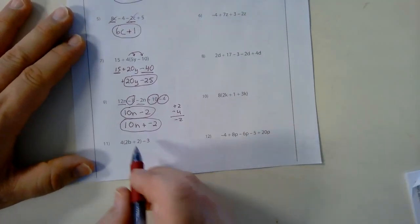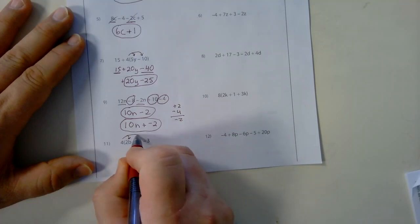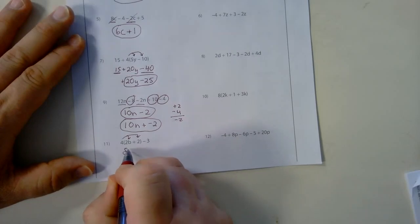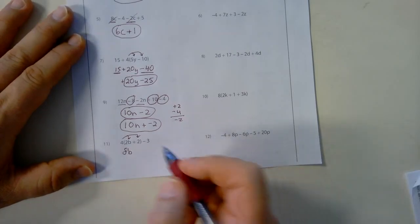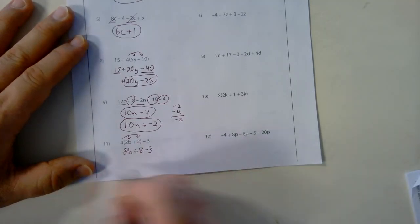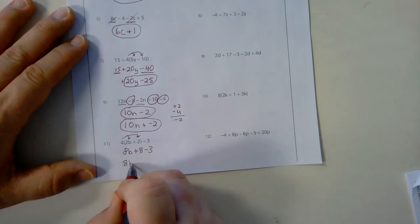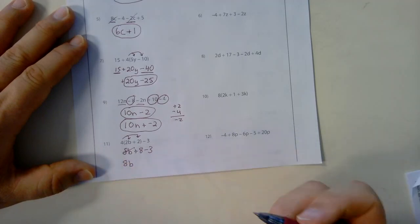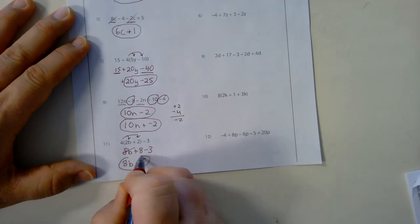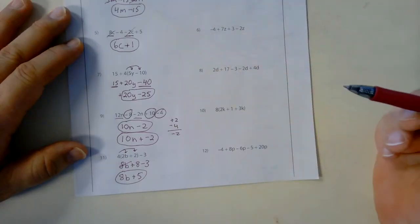Last question. Notice the parentheses. So I'm going to distribute the 4 to the 2b and the 4 to the positive 2 first. 4 times 2b is 8b. 4 times 2 is positive 8. And then I have my minus 3 at the end. Put together like terms if we have them. I do have an 8b. So that is the only variable in the expression. And positive 8 minus 3 is positive 5. So there's my final answer. Notice all of our answers are binomials. All simplified through.